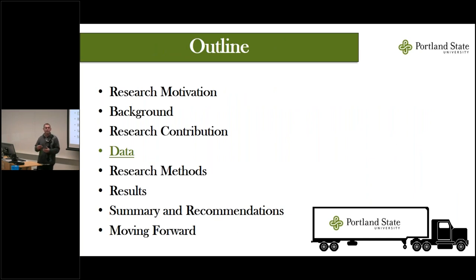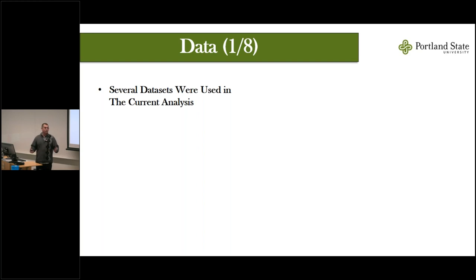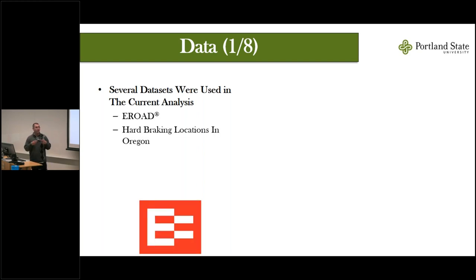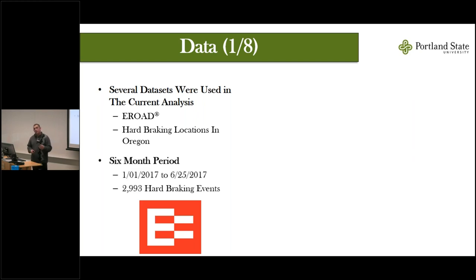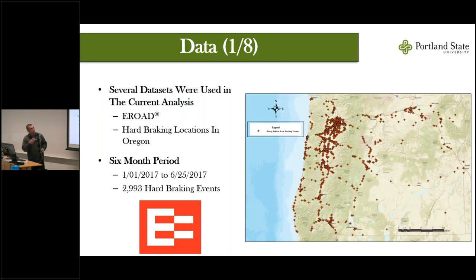This data-driven analysis uses several data sets, but it wouldn't have been possible without EROAD's hard braking event data. EROAD defines the hard braking threshold as a reduction in speed of 10 kilometers per hour in one second — equivalent to 6.21 miles per hour or 0.28 g's. This data was collected over a six-month period from January through June 2017 and consisted of nearly 3,000 hard braking events throughout the state of Oregon. Geocoding these events, we can observe natural clustering along US 101, densely populated areas along I-5, and southern US 97.